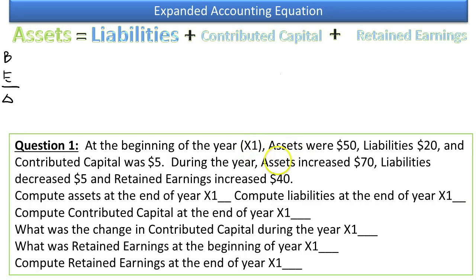At the beginning of the year, X1, assets were 50, liabilities were 20, and contributed capital was 5, so we don't know beginning retained earnings. During the year, assets increased by 70, so they went from beginning plus the change equals the ending, and the ending is something we don't know yet.